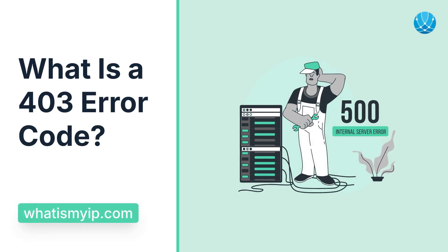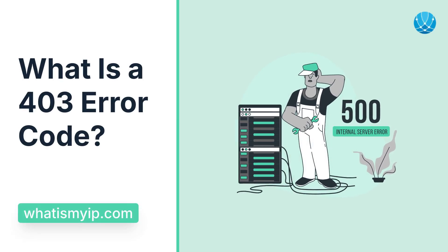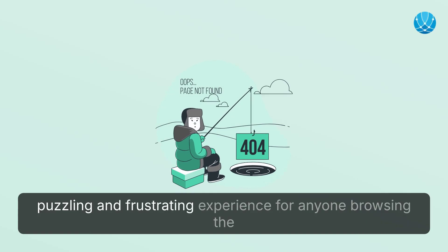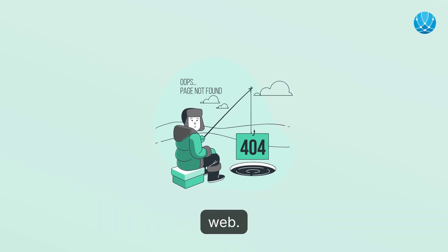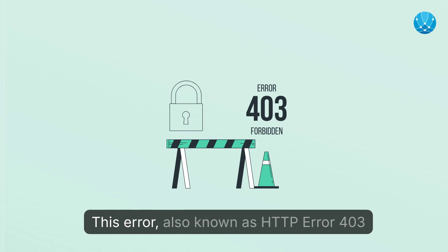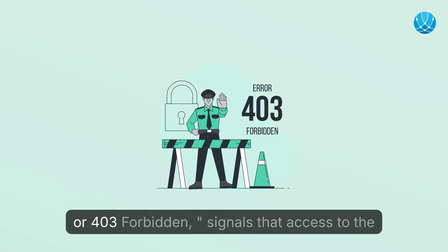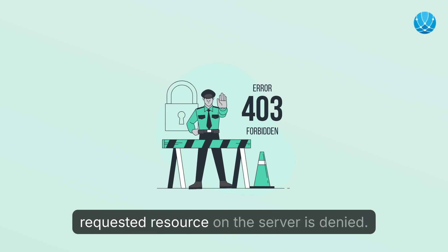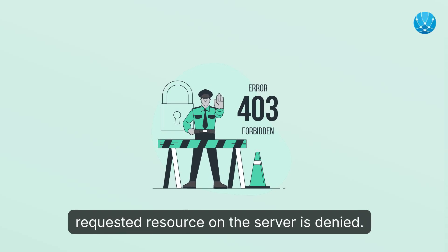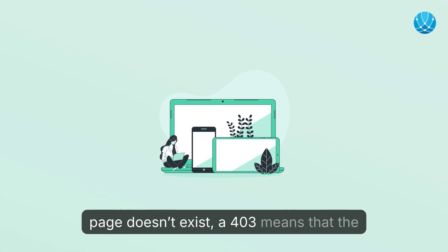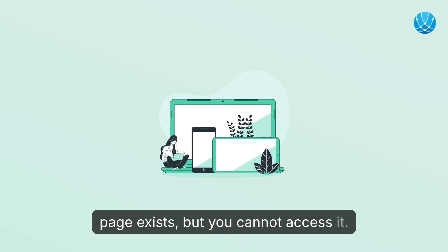What is a 403 error code? Encountering a 403 error code can be a puzzling and frustrating experience for anyone browsing the web. This error, also known as HTTP Error 403 or 403 Forbidden, signals that access to the requested resource on the server is denied. Unlike a 404 error, which indicates that a page doesn't exist, a 403 means that the page exists but you cannot access it.